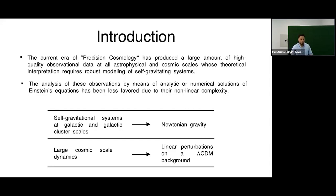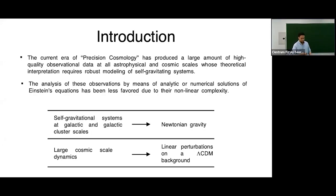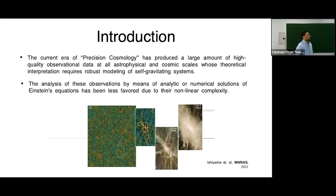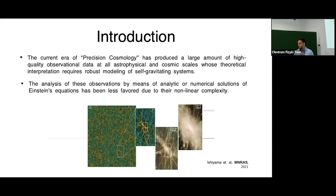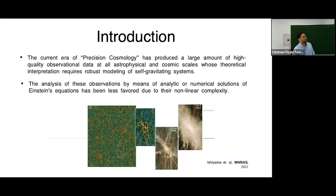At intermediate scales, around 100 megaparsecs, we start with the universe being roughly homogeneous but model small perturbations around it. When we look at 50 megaparsecs, the universe is not exactly homogeneous and isotropic. At 10 megaparsecs we see structures — superclusters — which are entering their own nonlinear regime.